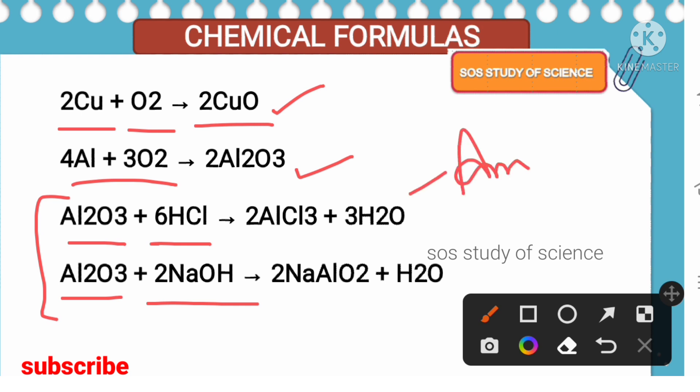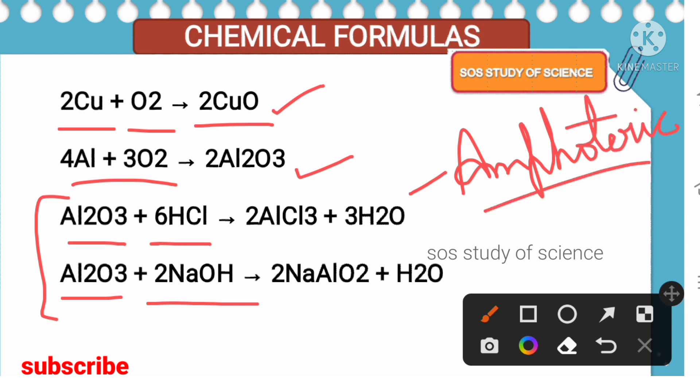Aluminium oxide combined with acid AND with base — these are examples of amphoteric oxides. Amphoteric oxides are metal oxides that react with both acids and bases. According to your textbook, examples are aluminium oxide and zinc oxide. When aluminium oxide reacts with acid, it forms aluminium chloride; when it reacts with sodium hydroxide, it forms sodium aluminate — both with water.